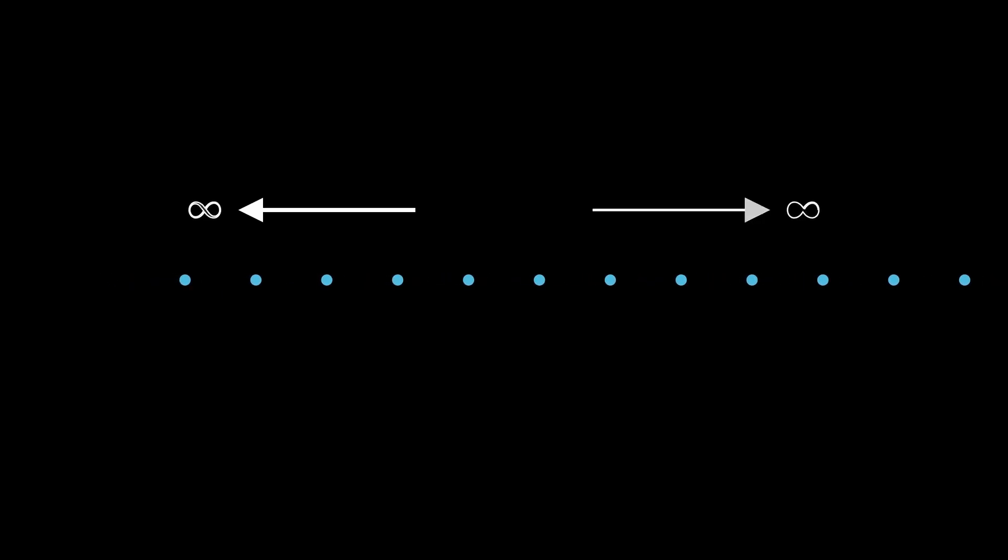Of course, such a system doesn't exist in real life, but we can approximate it with just a really, really long line of dots. In this system, as long as you're somewhere in the middle, it would make almost a negligible difference if you were to move from one dot to another.